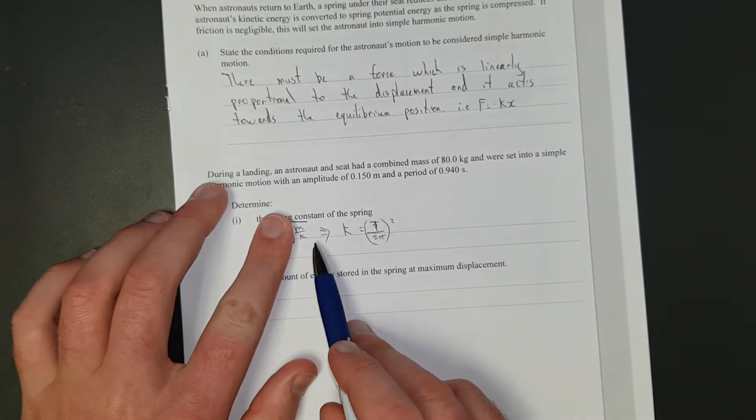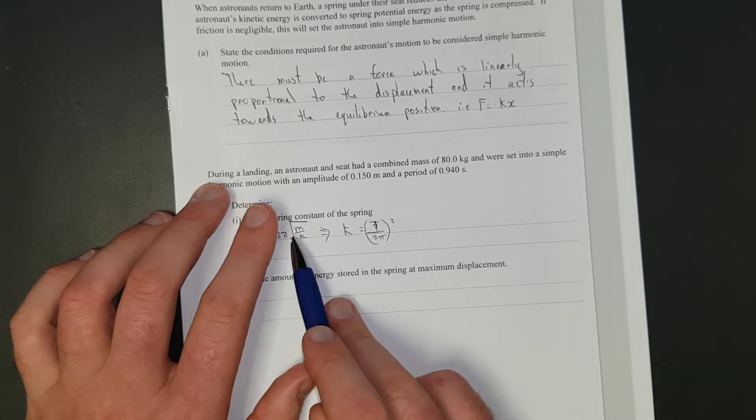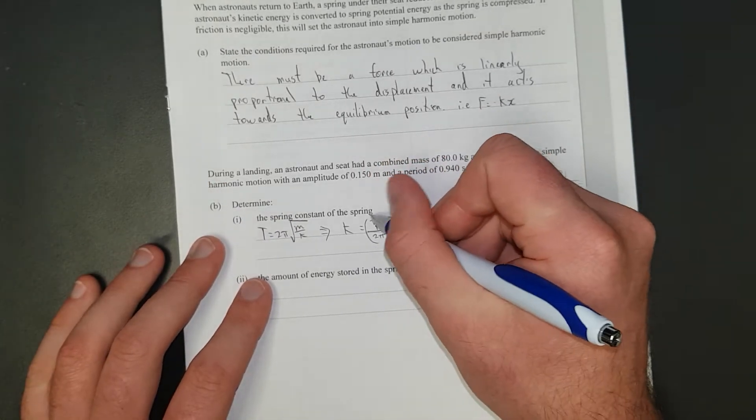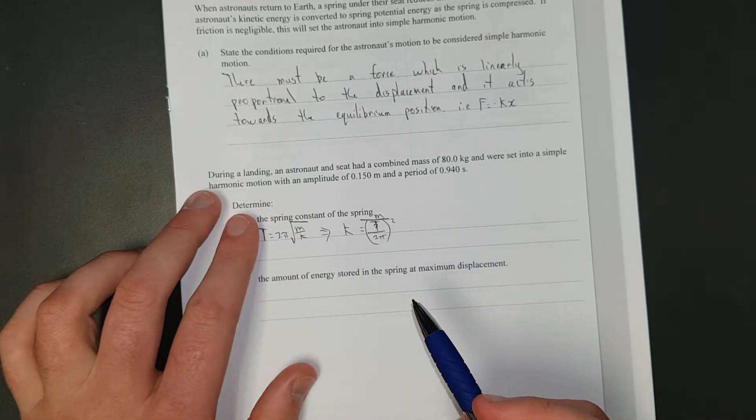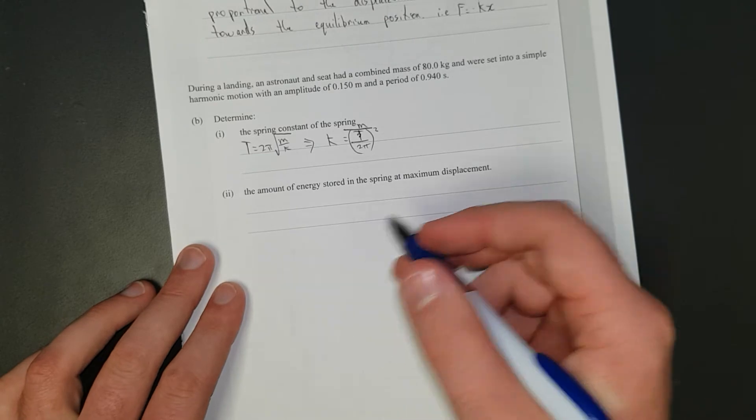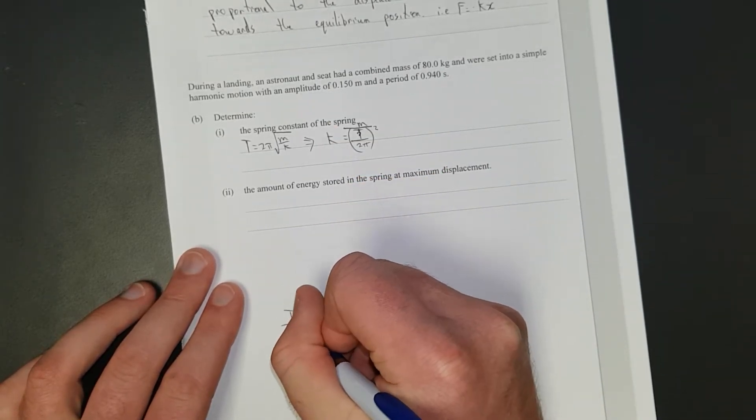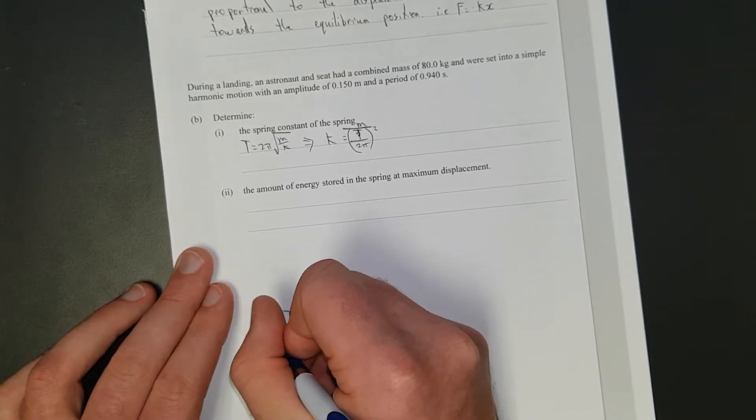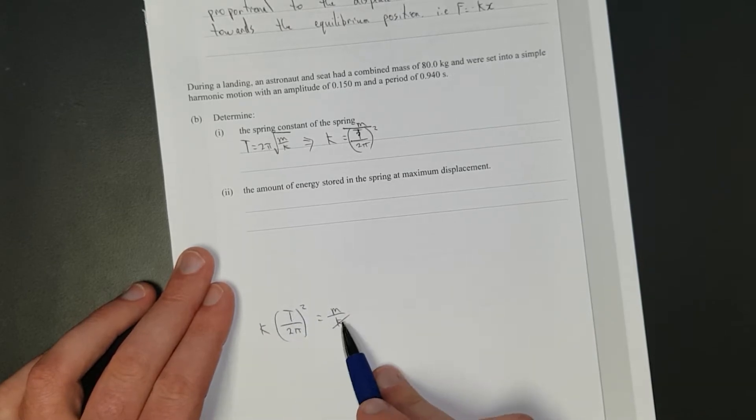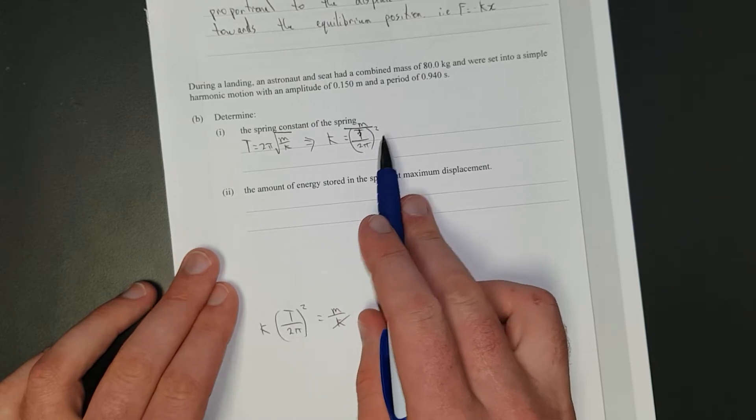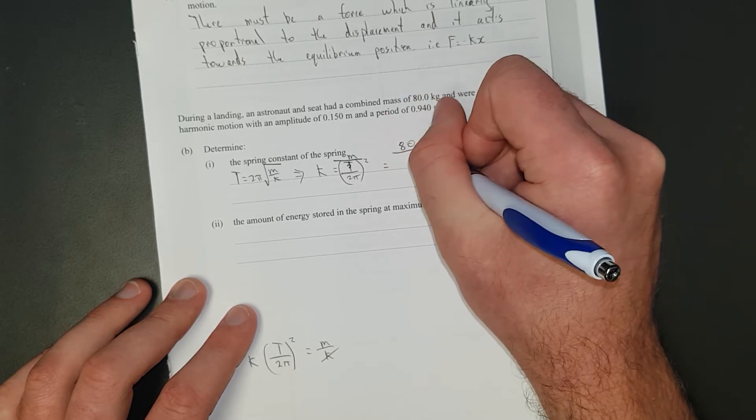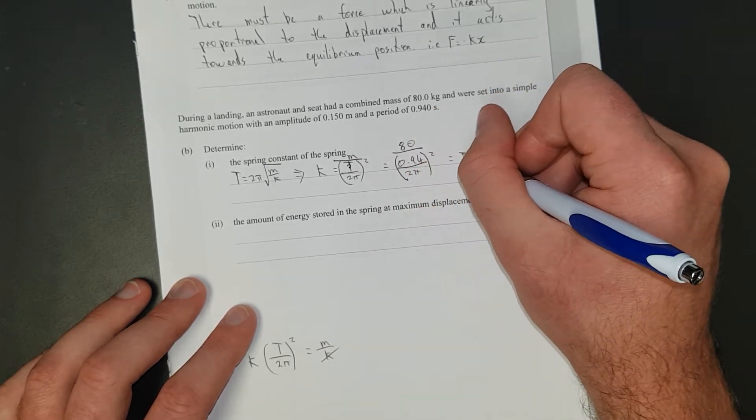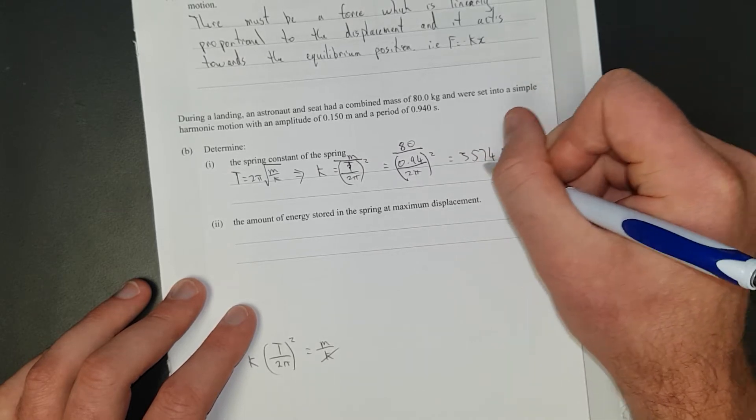I'll derive it: T over 2 pi squared equals M over K. Multiply both sides by K and rearrange to get K equals M divided by T over 2 pi squared. Substituting: K equals 80 divided by 0.94 over 2 pi squared, which equals 3,574 Newtons per meter.